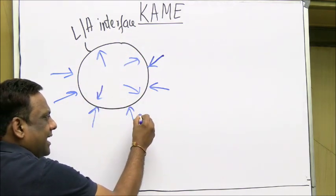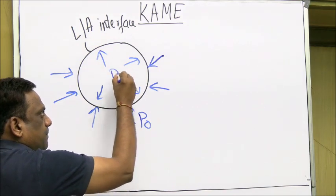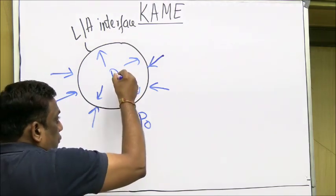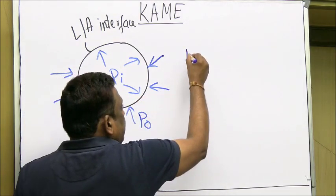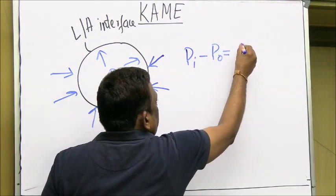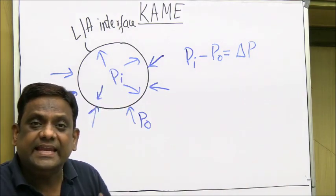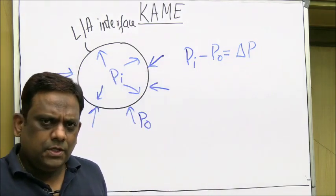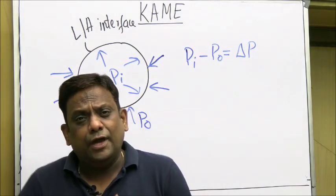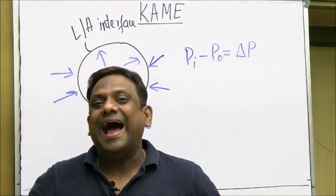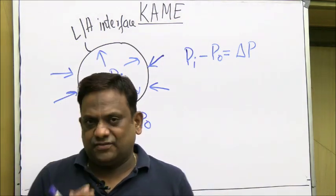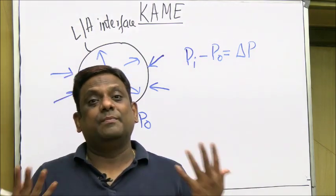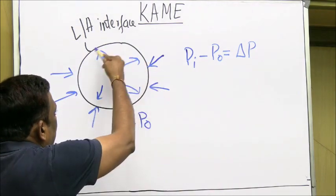Let this be P0 (outside atmospheric pressure) and let this be PI (inside absolute pressure). We want to calculate the difference — inside minus outside — which we call gauge pressure or pressure in excess of the surrounding atmospheric pressure. Surface tension is seen only at the surface. Due to unbalanced cohesive forces, the surface acts like a stretched membrane.